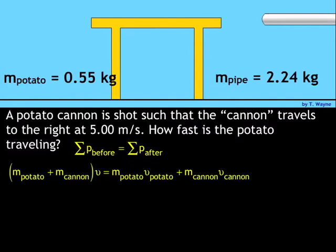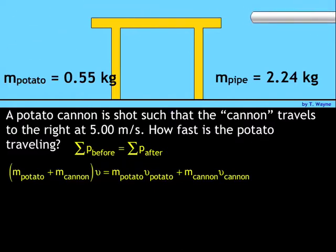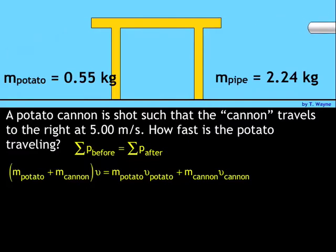After the explosion, I've got them separating apart, so I have the momentum of the potato plus the momentum of the cannon. In other words, mass of the potato times velocity of the potato, plus the mass of the cannon times the velocity of the cannon.